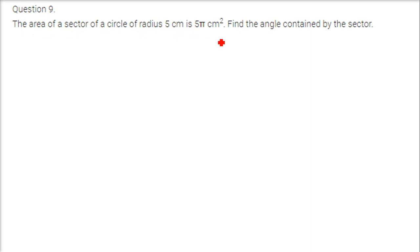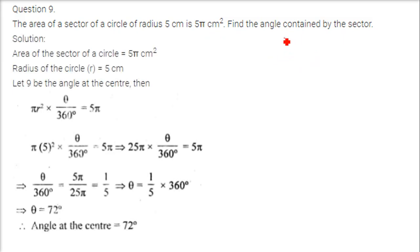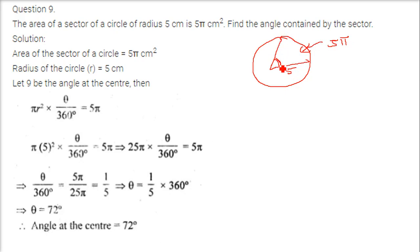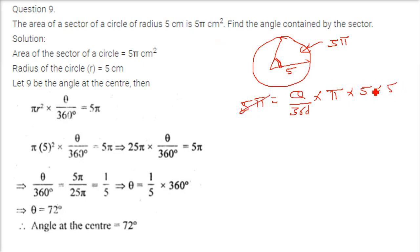The area of a sector of a circle of radius 5 cm is 5 pi cm squared. Find the angle contained by the sector. Setting up: 5 pi equals theta by 360 into pi r squared, where r is 5. So 5 pi equals theta by 360 into 25 pi. Pi and 5 cancel, giving theta equals 360 by 5, which is 72 degrees.